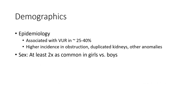Regarding demographics and epidemiology, vesicoureteral reflux (VUR) is associated in 25 to 40% of cases, with higher incidence in obstruction and duplicated kidneys. UTI is at least two times more common in girls than boys.